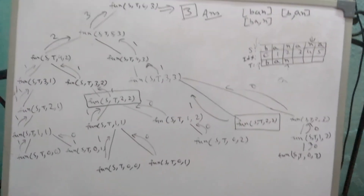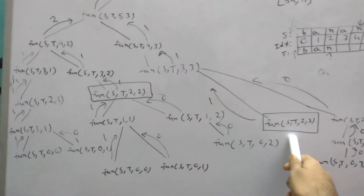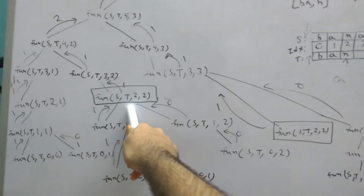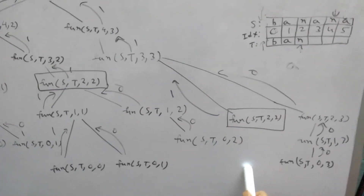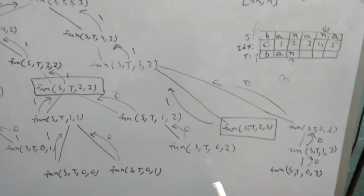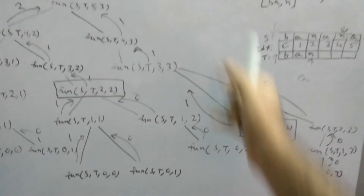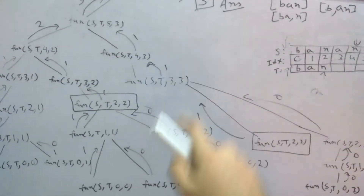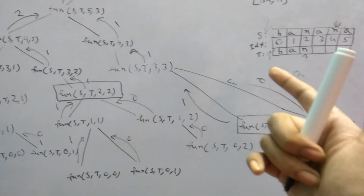You can pause the video and study the full recursive tree to understand the algorithm clearly. We ultimately get the answer 3. Importantly, if you look at the recursive tree, you can see there are overlapping subproblems — for example, the call with (s=2, t=2) appears multiple times. Whenever there are overlapping subproblems, we can use caching and dynamic programming for better optimization.